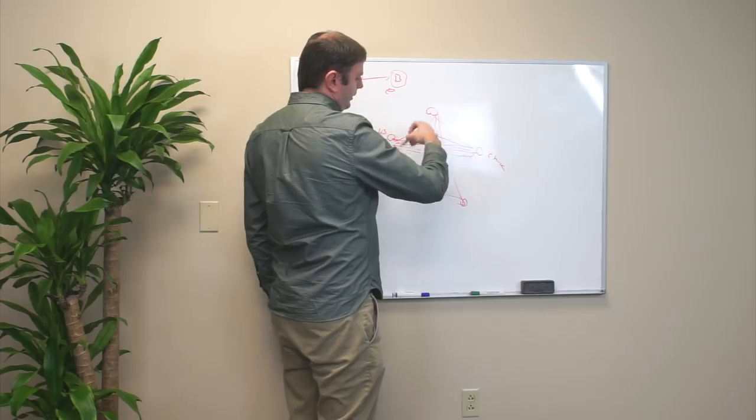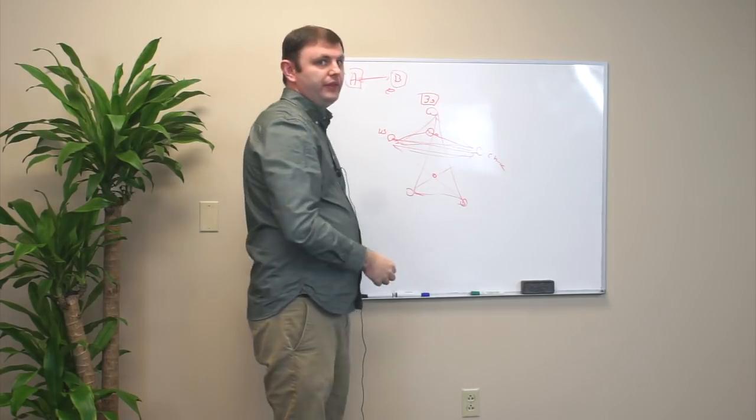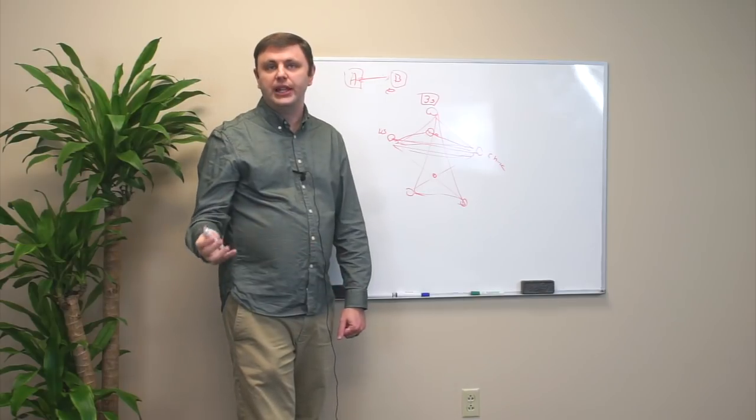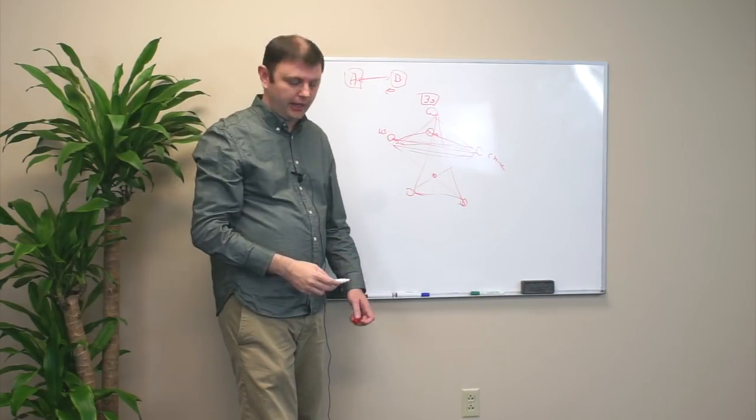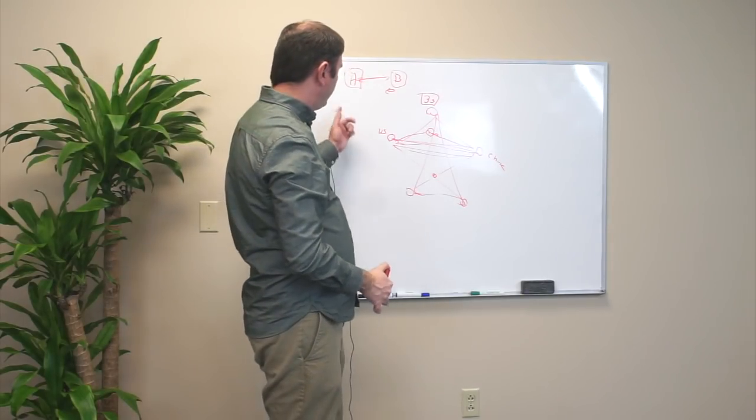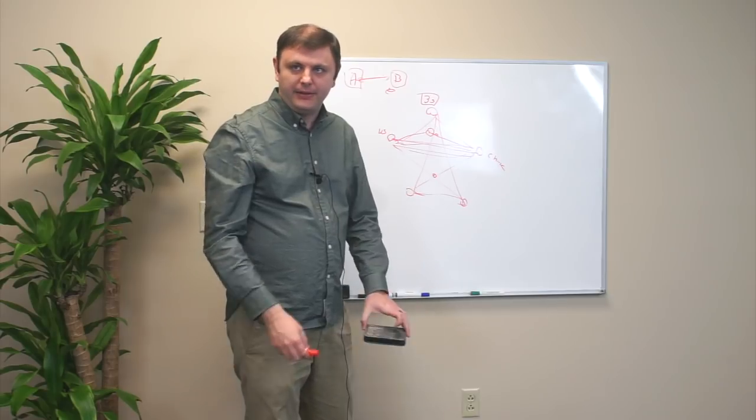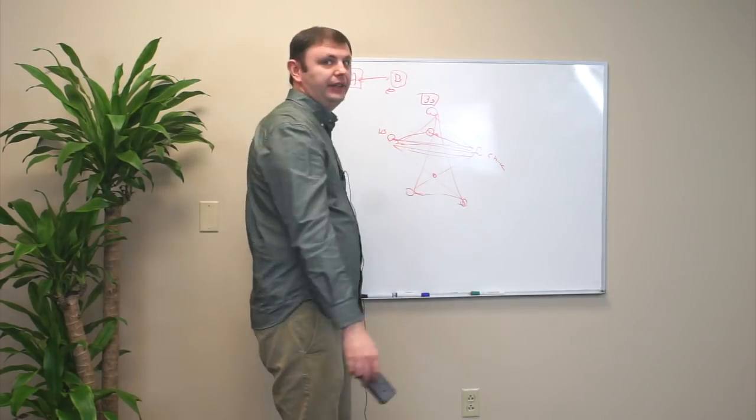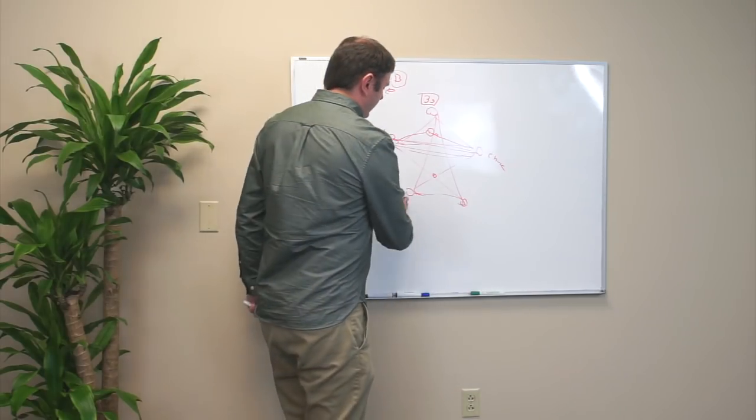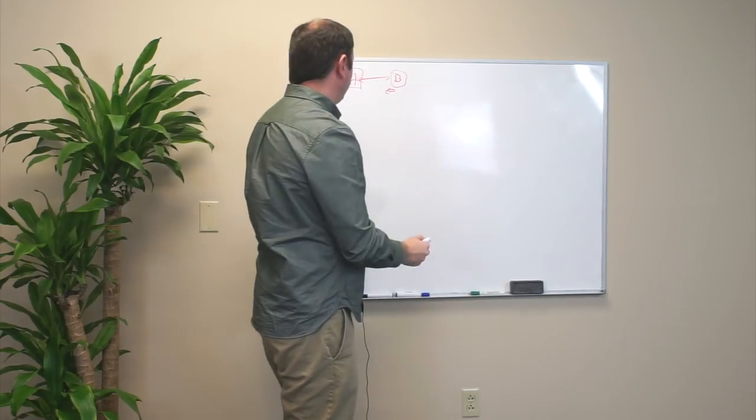This is why Steem and BitShares have a three-second block time, because three seconds has produced a stable network that allows for all this propagation delays. You can tell by these times that it seems like half a second is probably impossible. How in the world can you do half a second when it takes half a second to go to China and back?